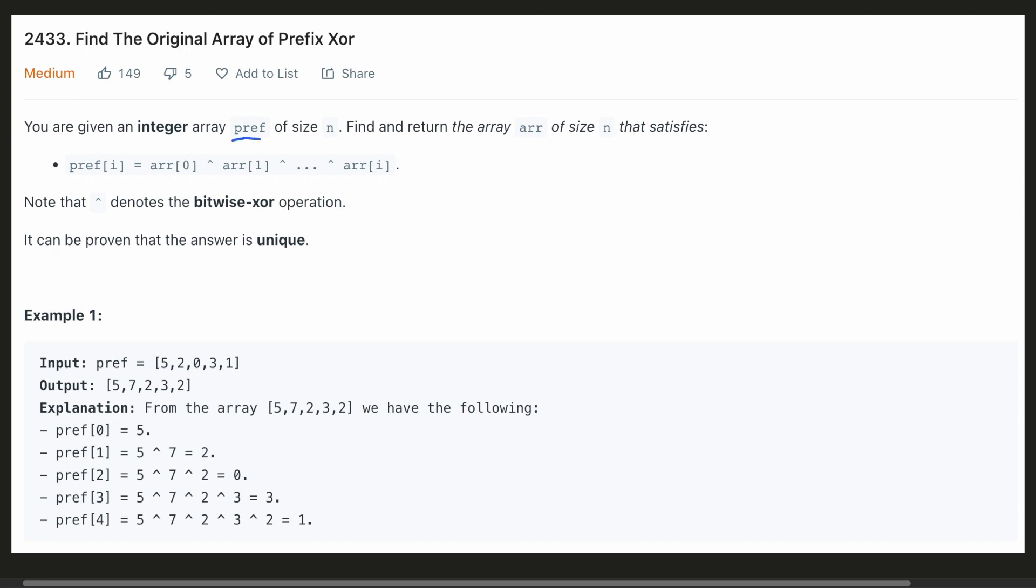We are given a prefix array of size n and we have to generate an output array that satisfies the condition given. Now let's try to understand the condition.